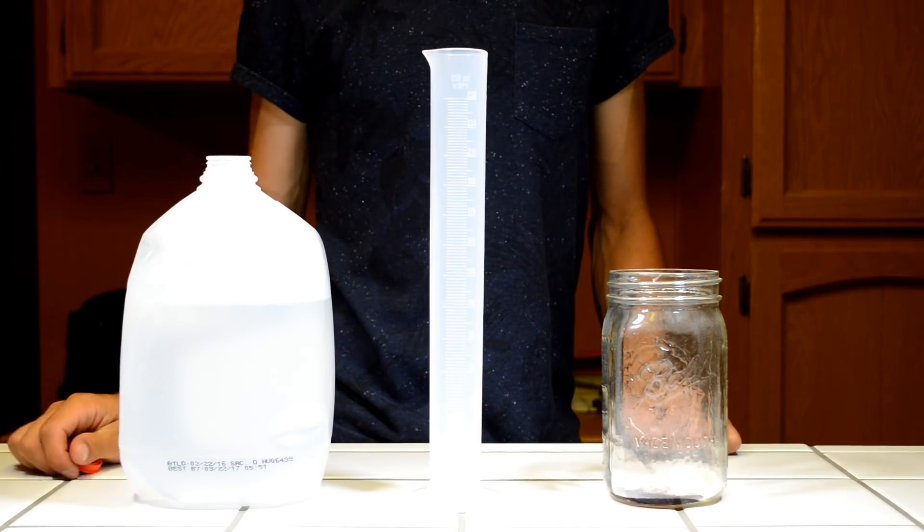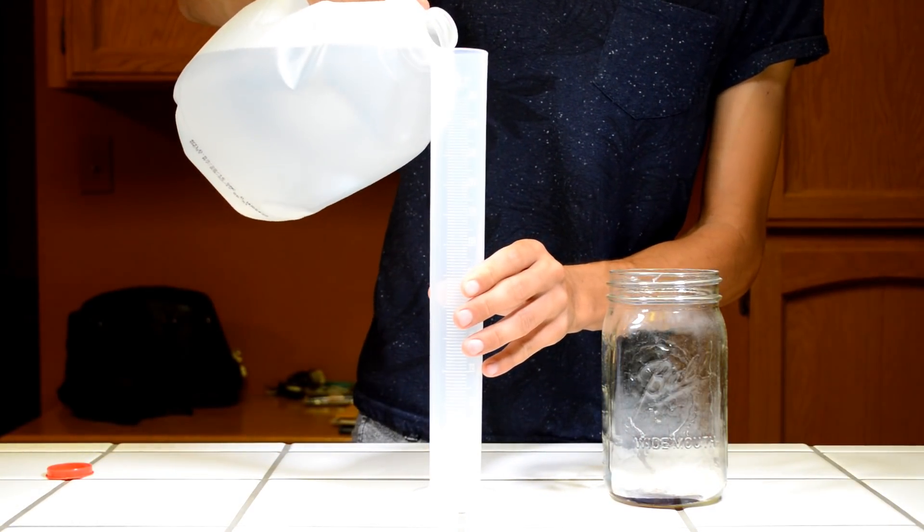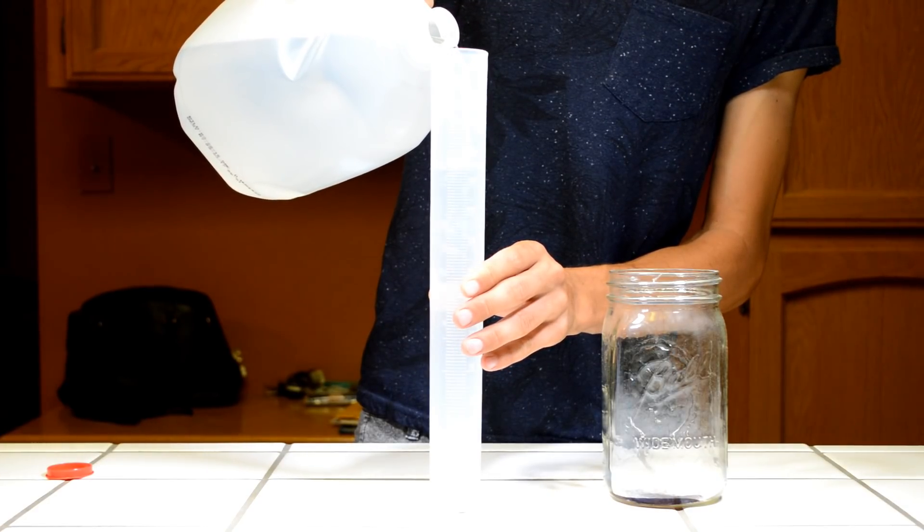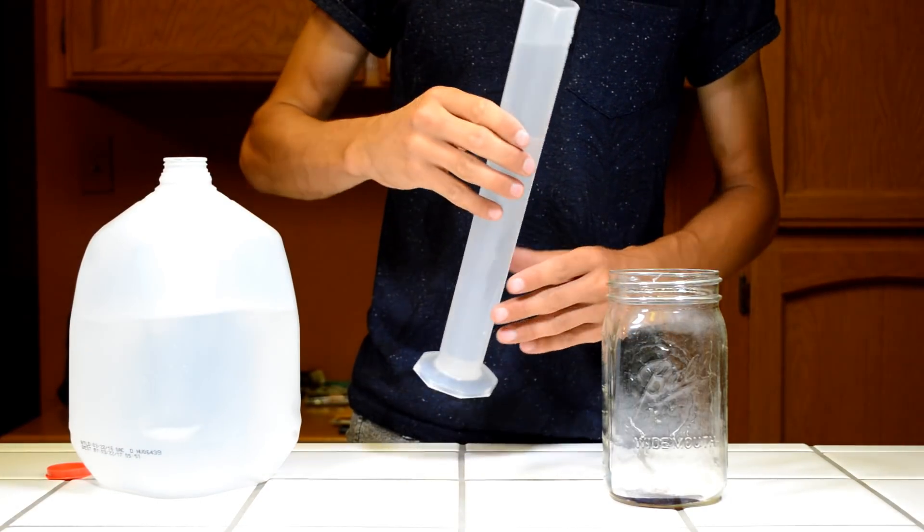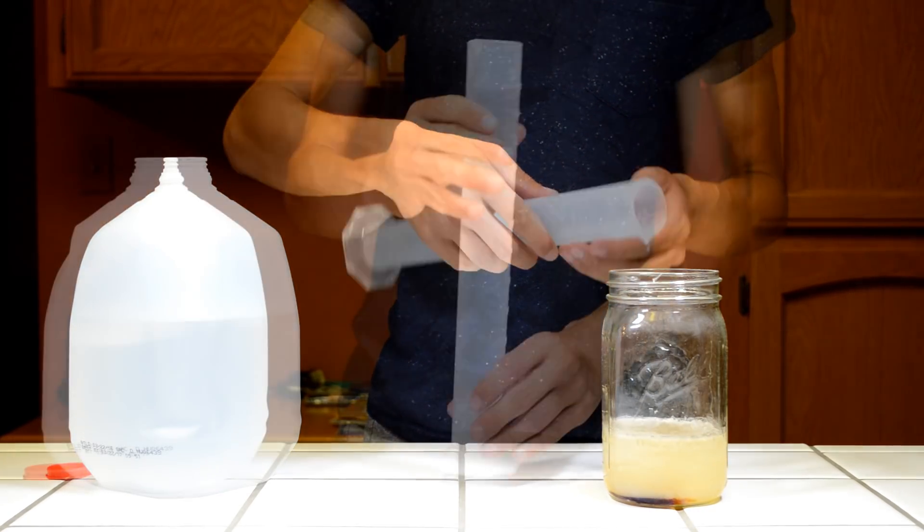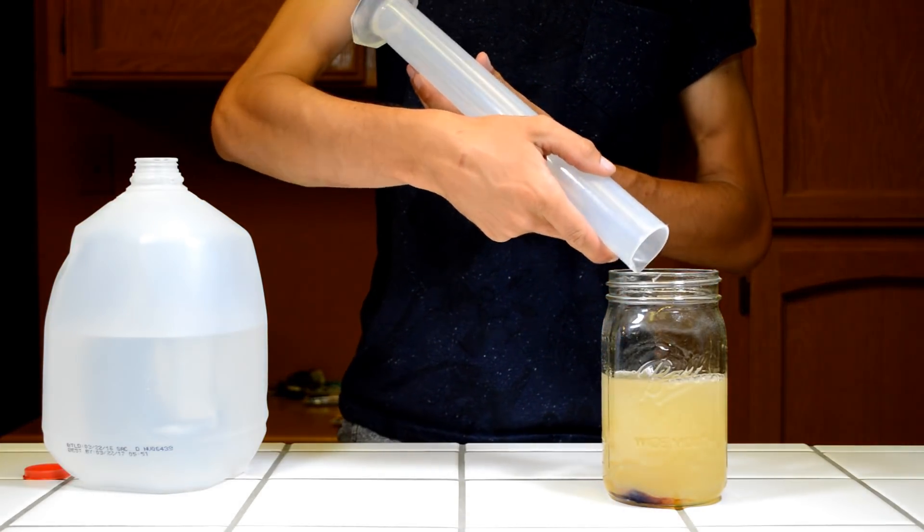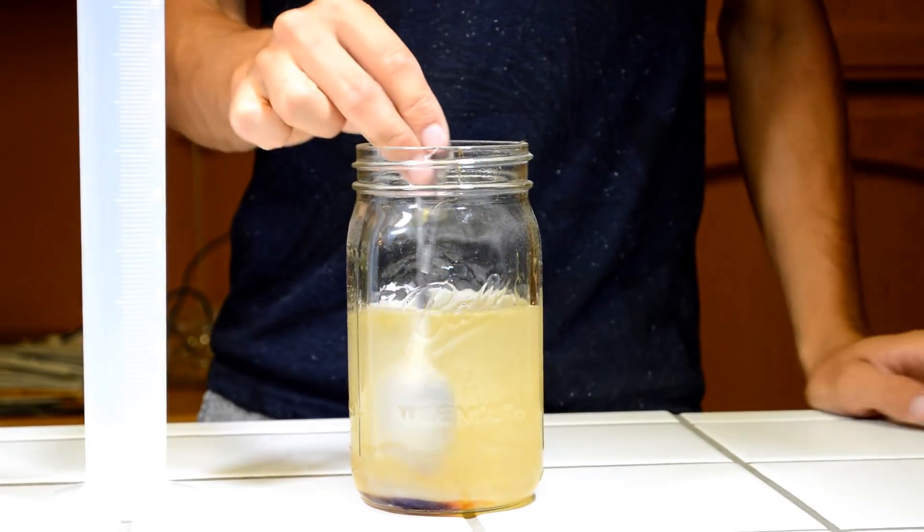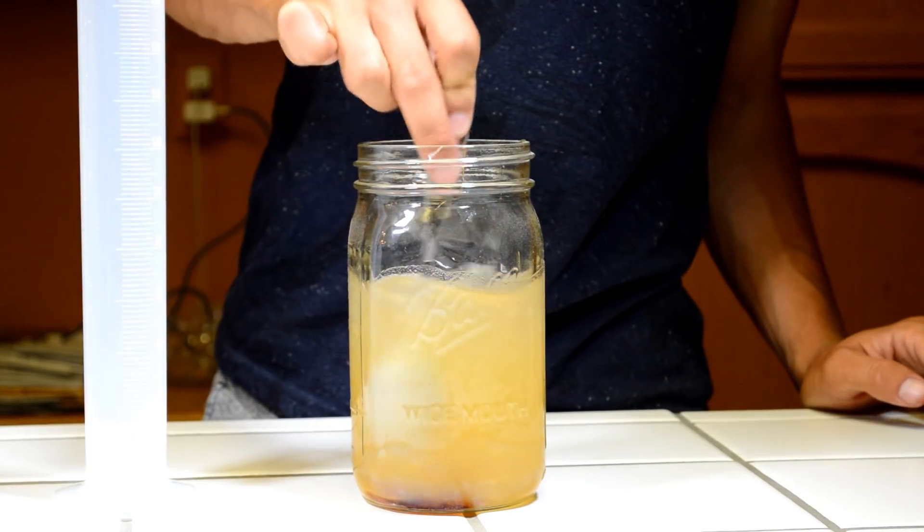Then we will measure out 500 milliliters of distilled water. The malt extract is like thick molasses and may take a bit of patience to get completely dissolved.